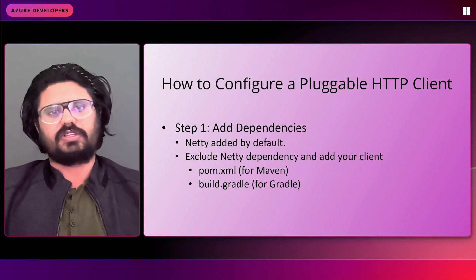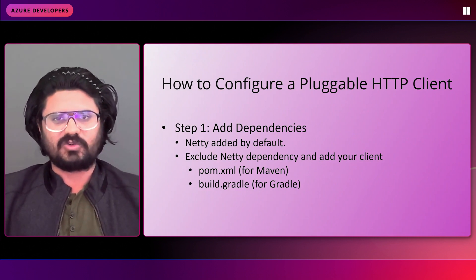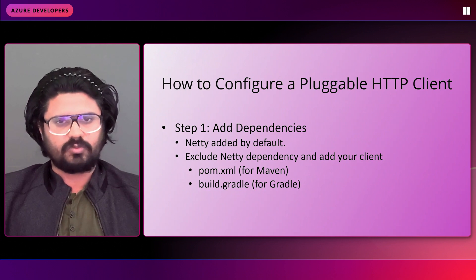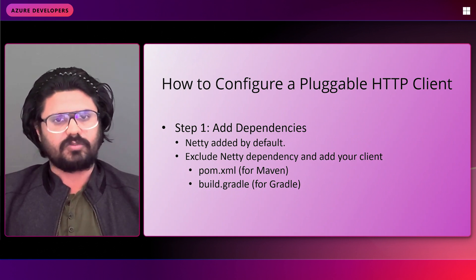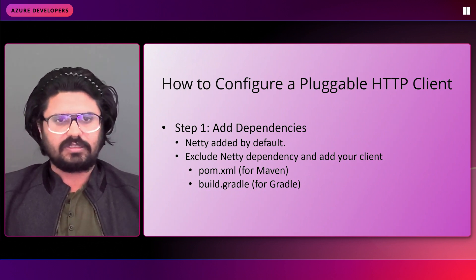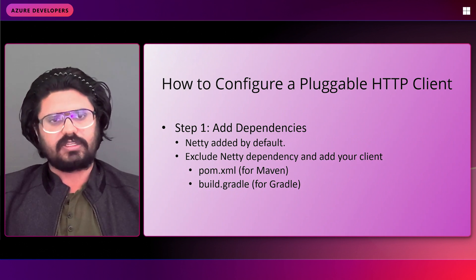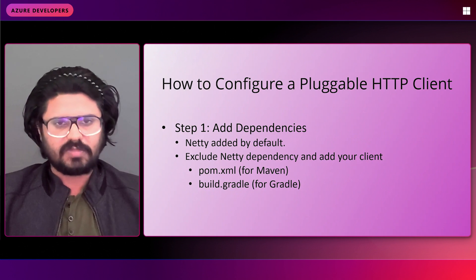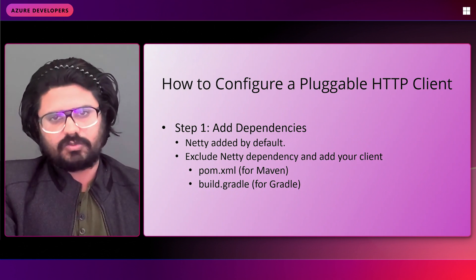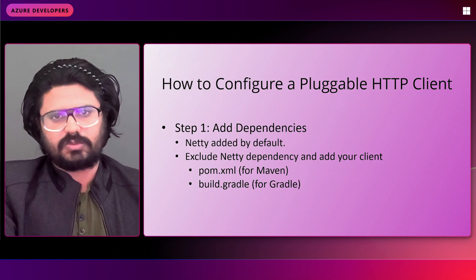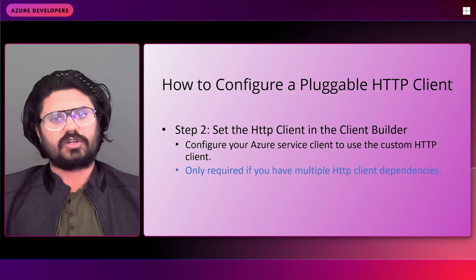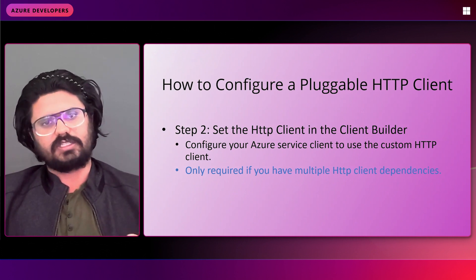Moving on to how to configure the Pluggable HTTP client. It's usually a one-step process where you just add the dependency in your POM file or the Gradle file of the application you're building. Since Netty is already added by default, you don't need to do anything there. But if you're looking to switch to OkHttp, you'll need to add that dependency into your POM file, and we'll see an example of that. The other option is to directly set the HTTP client in your client builder after adding the dependency.